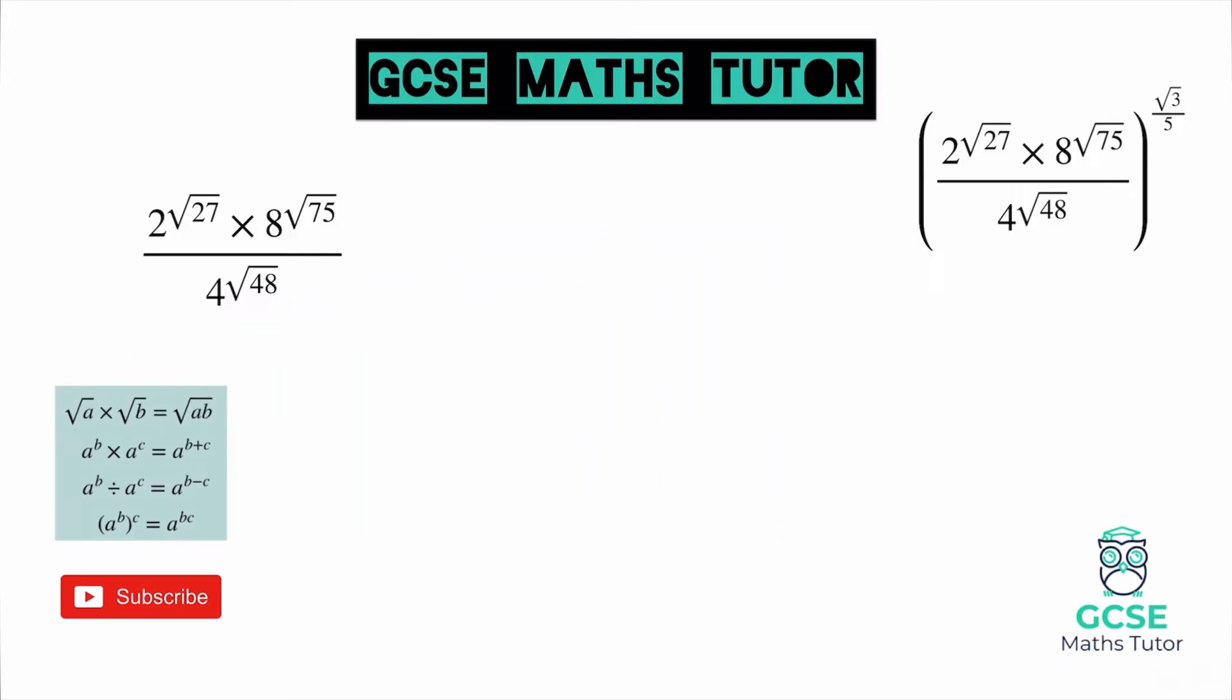Now first things first, let's have a look at seeing if we can simplify some of these thirds. So you've got root 27, root 75, and root 48. Now they are all multiples of 3. So 9, 25, and 16 are all square numbers, so they can all be simplified. So if we simplify these thirds, we would get this.